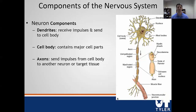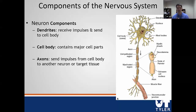Now let's look at the nervous system. These systems are going to respond to alterations in homeostasis. The rest of the lecture will be some very basic nervous system structure and function so that we can build on that later in the next module. The major component of the nervous system, of course, is the nerve. Nerves all have certain specific parts.